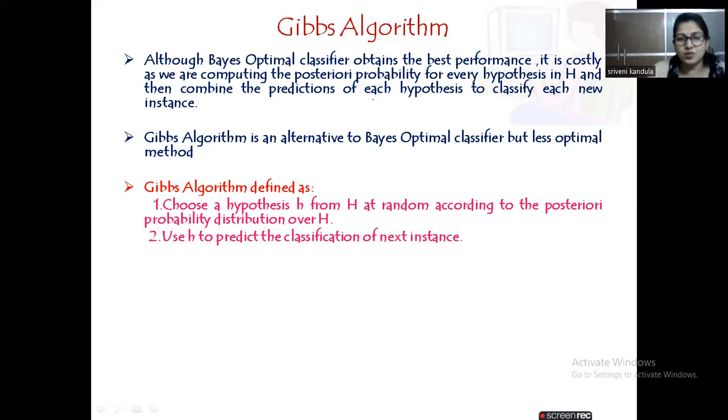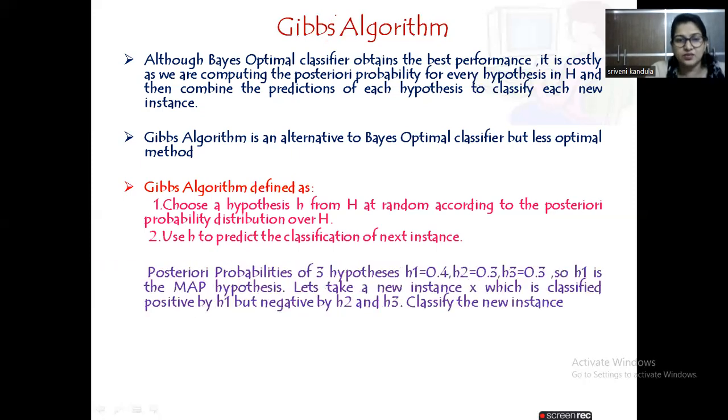Whatever hypothesis you have picked at random, say suppose you have a set of three hypotheses. Let us discuss with the help of the previous example itself. This is the previous example that we considered for Bayes Optimal Classifier, where we have taken the posterior probabilities of three hypotheses h1, h2, and h3.